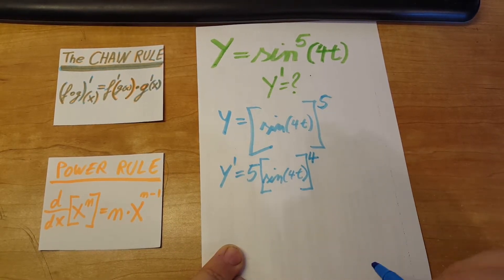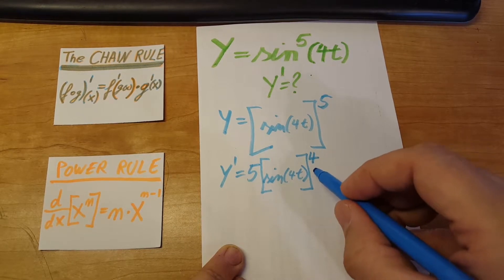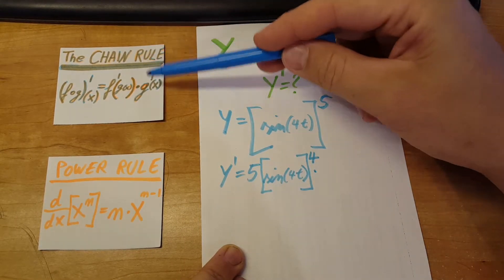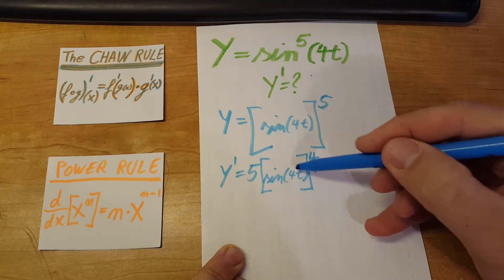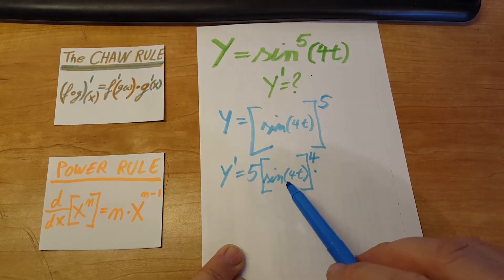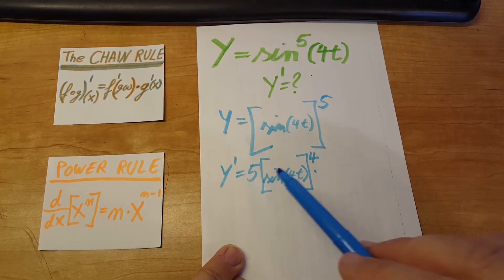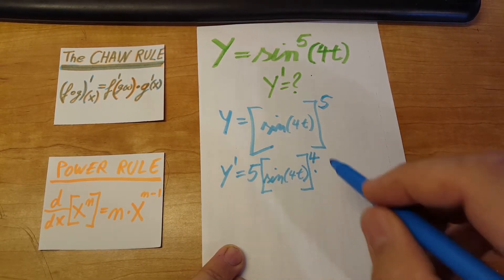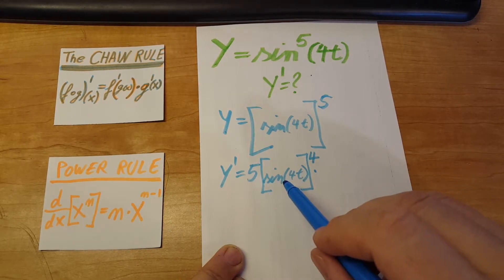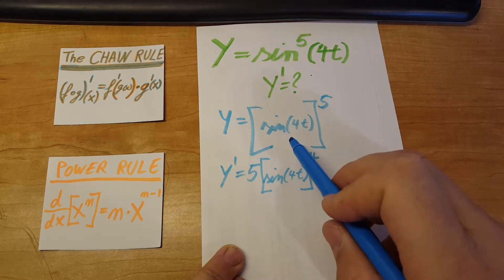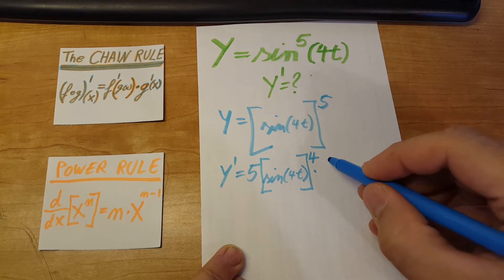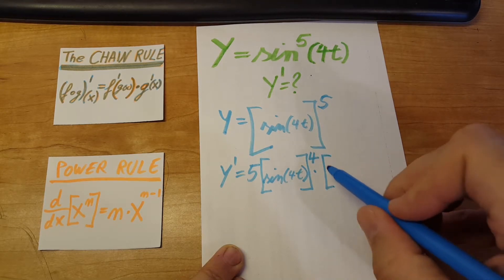Now using the chain rule second part, take a derivative of the inside here. But in order to take a derivative of this one, we're gonna have to use the chain rule again. So in this example we're using the chain rule twice. Let's take a derivative of sine of 4t.